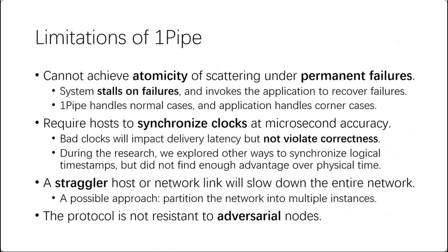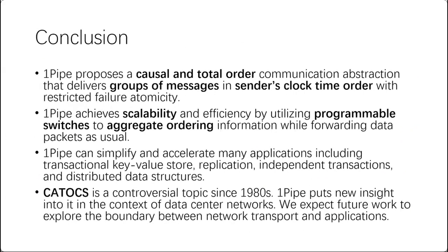Limitations of One Pipe: it cannot achieve atomicity of scatterings under permanent failures; it requires hosts to synchronize clocks at microsecond accuracy — bad clocks impact delivery latency but not correctness; a straggler host or network link will slow down the entire network; and it assumes all participants are non-adversarial, leaving security to future work. In conclusion, One Pipe proposes causal and total-order communication delivering groups of messages in sender's clock time order, achieving scalability and efficiency by utilizing programmable switches to aggregate order information. It can simplify and accelerate many applications including transactional key-value stores, replication, independent transactions, and distributed data structures.